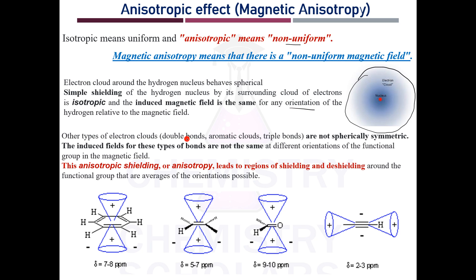For example, when molecules have a double bond, aromatic compounds, or triple bonds, the electron cloud is not spatially symmetrical. That is why the induced field for these types of electrons is not the same at different orientations. So if the hydrogen nucleus is present in one position it will feel a different magnetic field compared to a hydrogen nucleus oriented in a different direction.